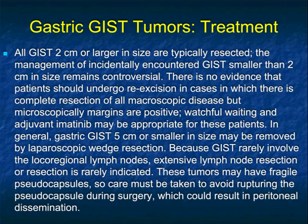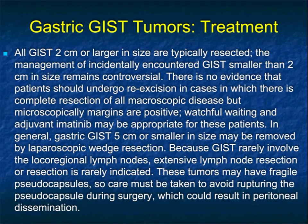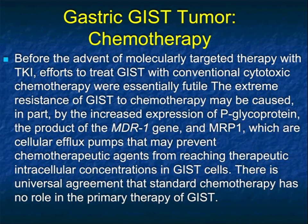The question about small tumors: GISTs above two centimeters should generally be resected. Smaller than two centimeters is somewhat controversial — watchful waiting and perhaps adjuvant imatinib therapy would be considered. GISTs under 5 cm may be removed by laparoscopic wedge resection; since nodes are rarely involved, nodal dissection is not necessary, and laparoscopy works well. When lesions get larger, open surgery is required, and there's concern for fragile pseudocapsules and peritoneal dissemination.